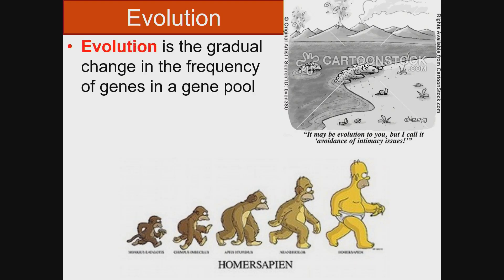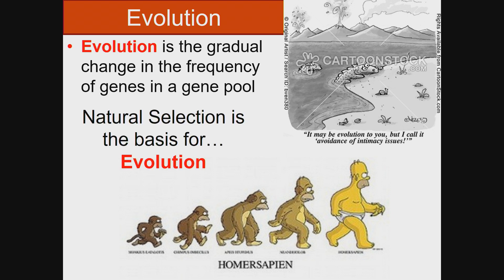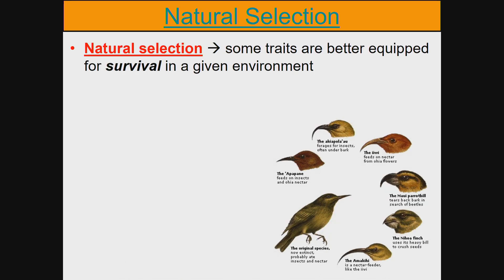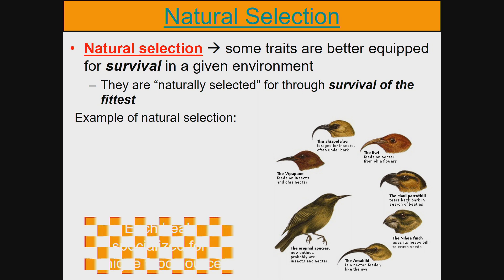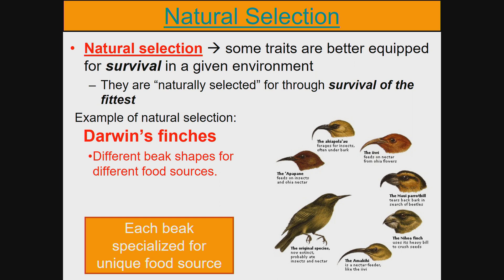Evolution is the gradual change in the frequency of genes in a gene pool. Natural selection is the basis for evolution. Natural selection is when some traits are better equipped for survival in a given environment — they are naturally selected for through survival of the fittest. A classic example of natural selection is Darwin's finches. Darwin noticed that the finches have different beak shapes, which made them really good at getting a certain type of food.